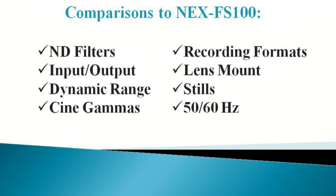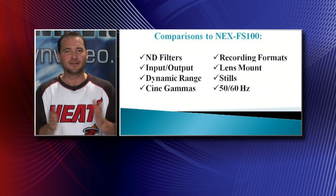Speaking of not losing detail in highlights and shadows, let's talk cine gammas. The FS100 has some cine gammas, but the FS700 brings you the hyper gamma curves found in the PMW-F3, inherited from Sony's senior HD camera line. The hyper gammas give your DP and DIT the capacity to really draw the viewer's eye exactly where you want it in high-contrast shots — preserving shadow detail and highlight detail simultaneously. The FS700 inherits these hyper gamma capabilities from the PMW-F3.